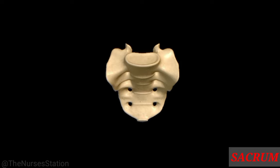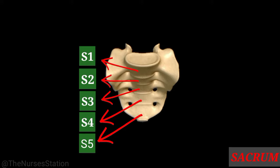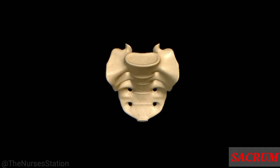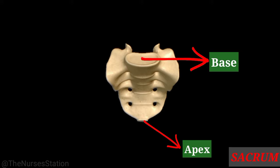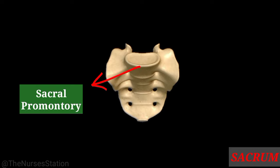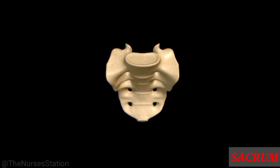Posteriorly the pelvis is formed by the sacrum. The sacrum is a triangular bone formed by the union of five sacral vertebrae S1 to S5. The female sacrum is shorter, wider, and more curved between S2 and S3 than the male sacrum. The narrow inferior portion is the apex; the broader superior portion is the base. The anteriorly projecting border of the base is called the sacral promontory. The superior surface contains a smooth area called the sacral ala.